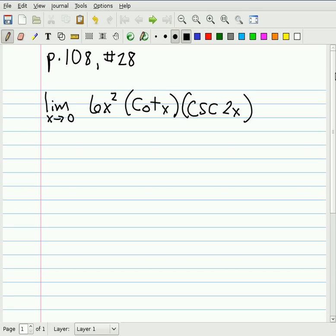Welcome. I'm working on page 108, number 28, which is a trigonometric limit. We're trying to find the limit as x approaches 0 of 6x times cotangent x times cosecant 2x.